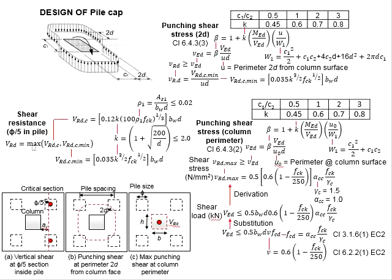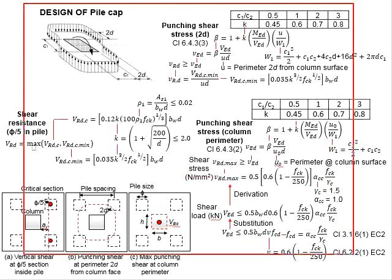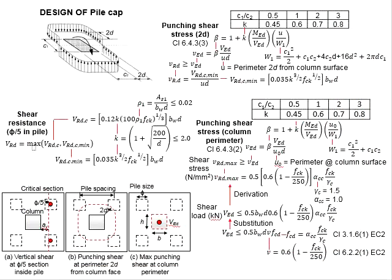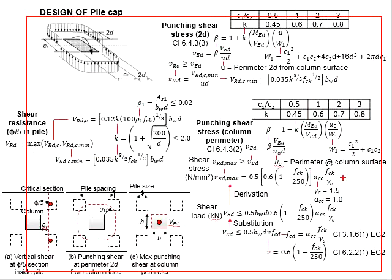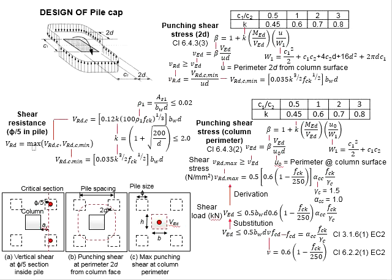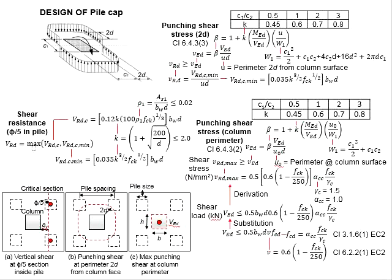This slide shows the formulas used to check for the shear resistance of the three critical sections of the pile caps. The formulas used here are very identical to the formulas used for the design of the pad footing as discussed in the previous video. There are three types of critical sections. Let us look into each of them one by one.